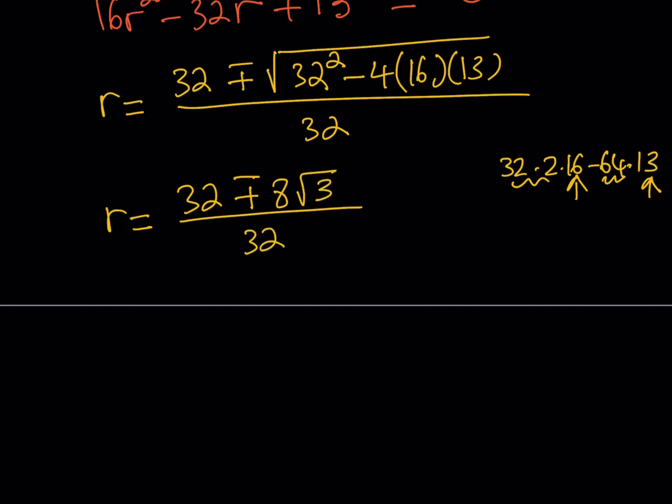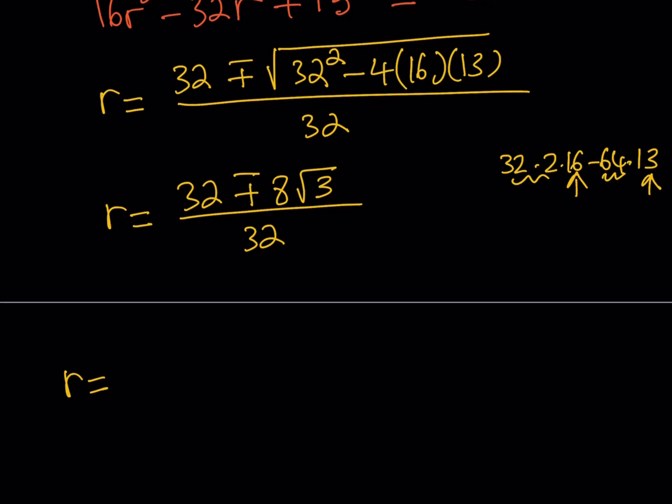We can't divide everything by 32 but we can divide everything by 8. If we do, we get 4 plus root 3 over 4 or that's r1, that's r2, 4 minus root 3 over 4. So at this point you've got to go back to your figure and decide which value you want to use. But you want to have an idea, right?